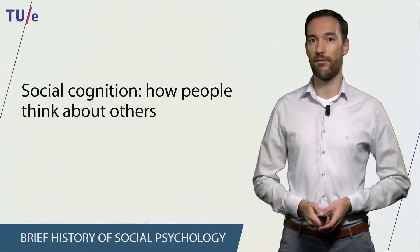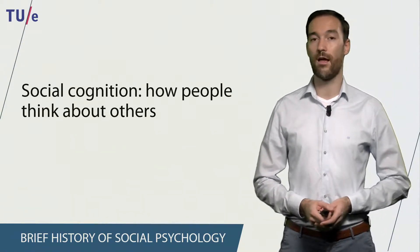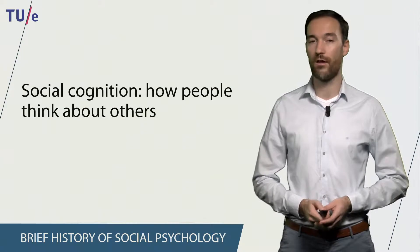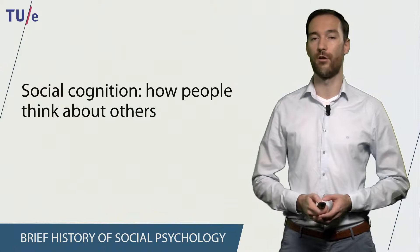The 1970s gave rise to social cognition. Social cognition can be defined as how people think about others and social relationships. I will explain more about social cognition in web lecture number 5.